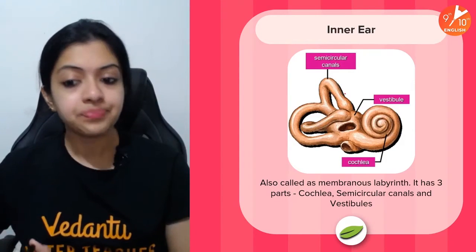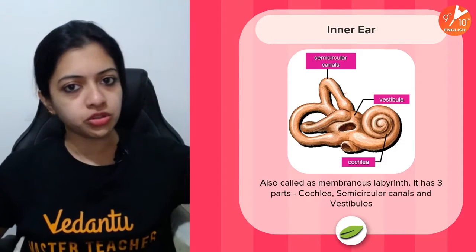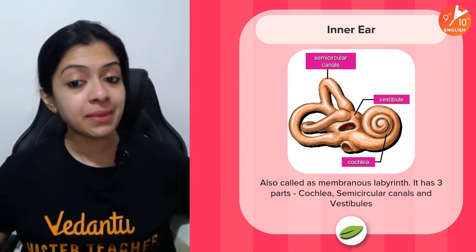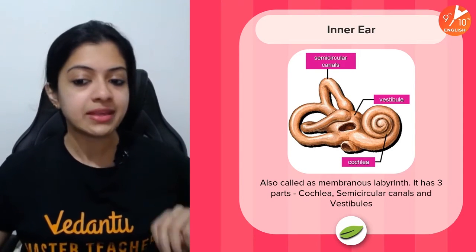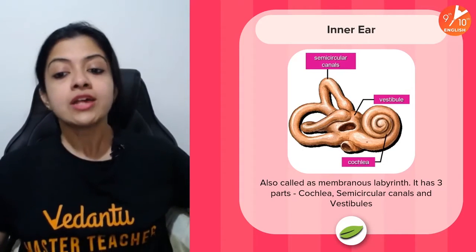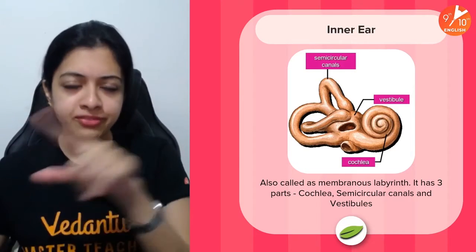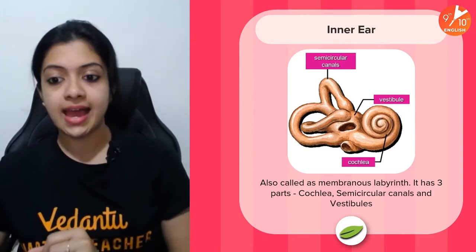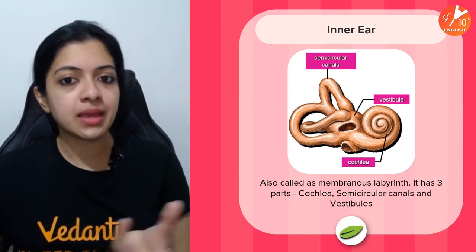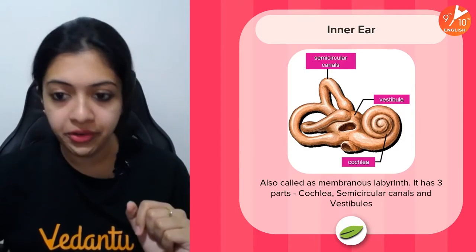The inner ear is also called the membranous labyrinth because of its maze-like structure. It has three major parts: the cochlea, which is a snail-like, highly coiled structure of about two and a half turns; the three semicircular canals; and the vestibule. The cochlea is filled with fluid which helps transmit sound vibrations further into the ear.